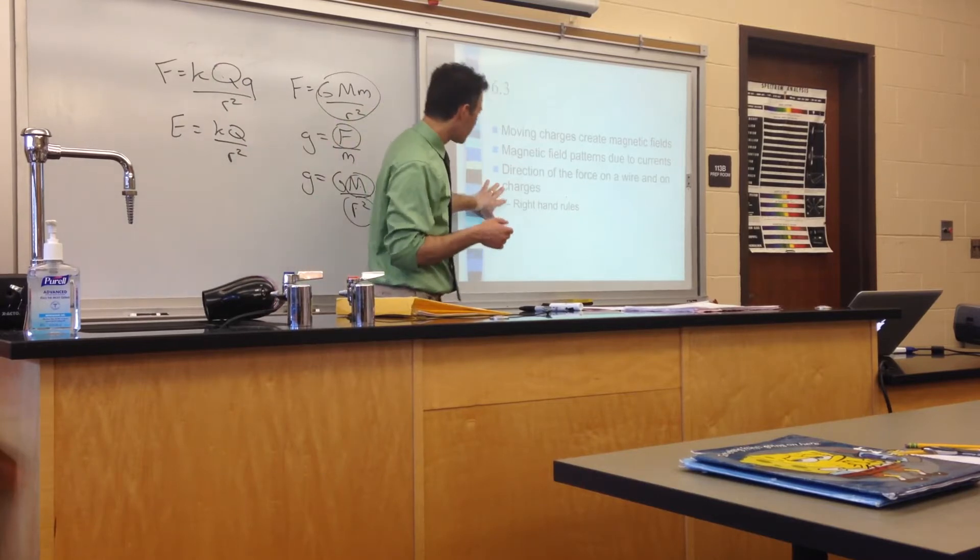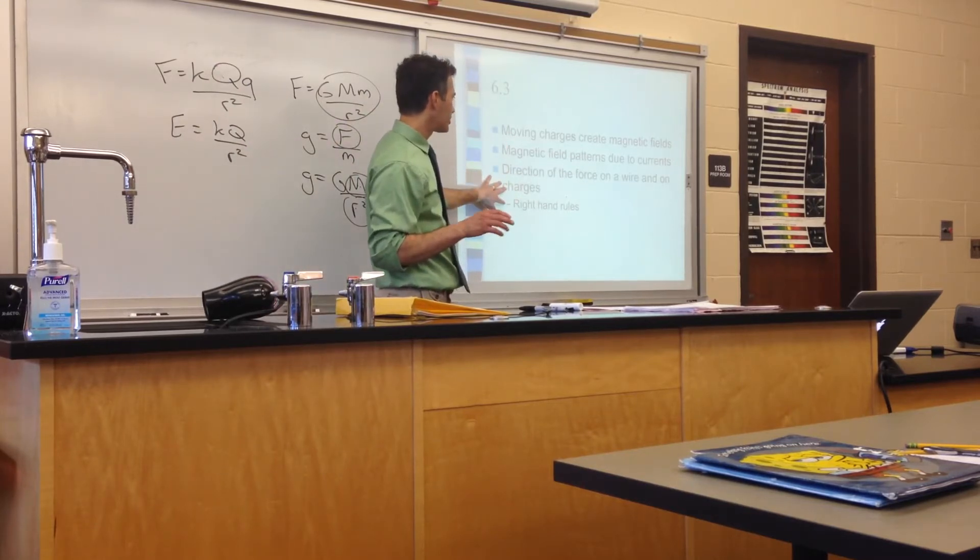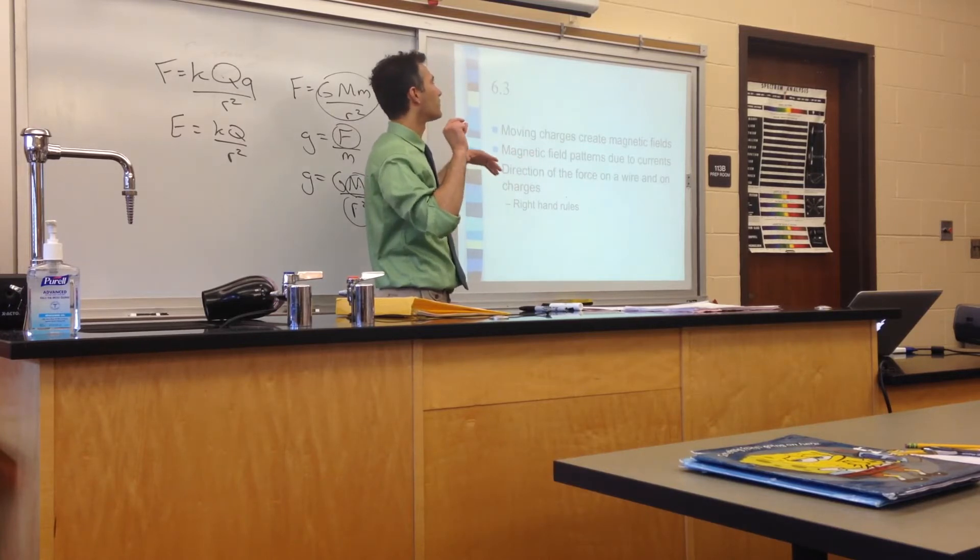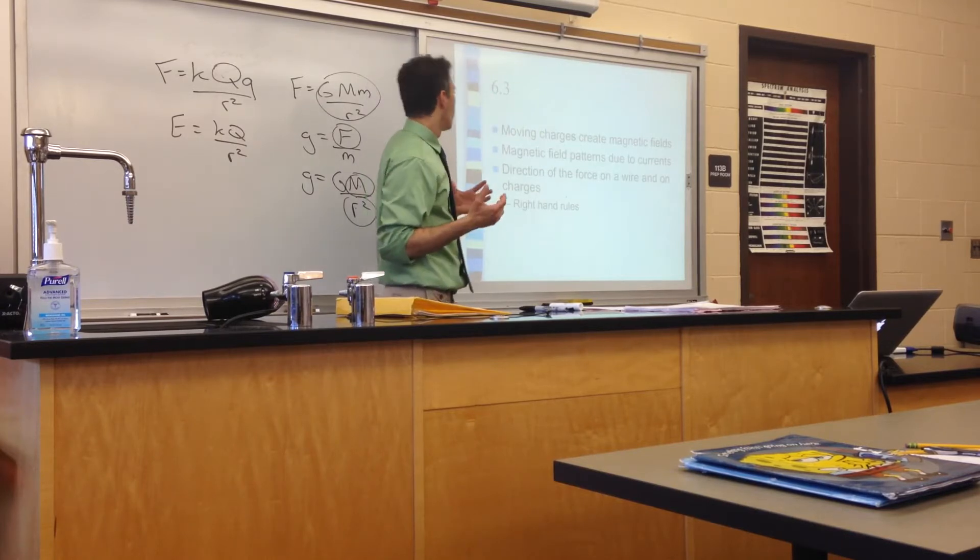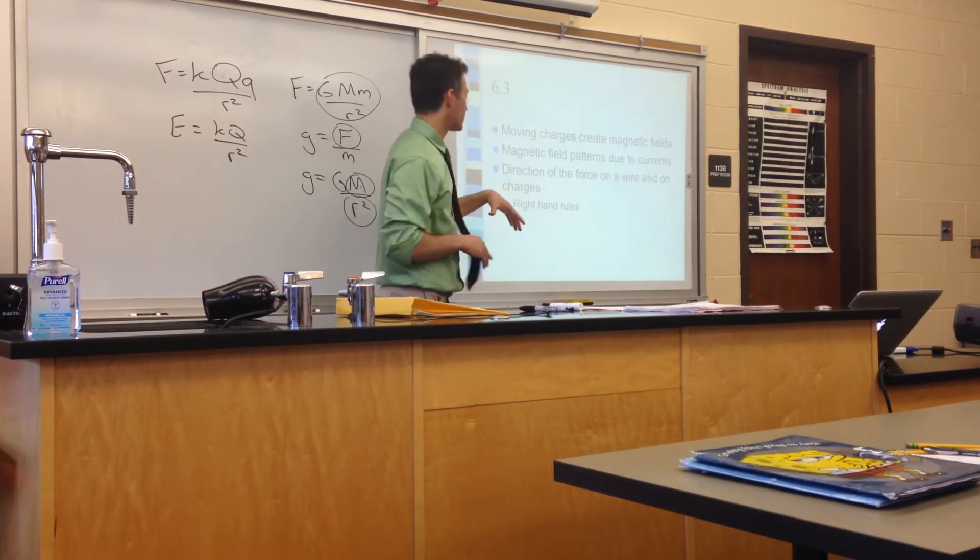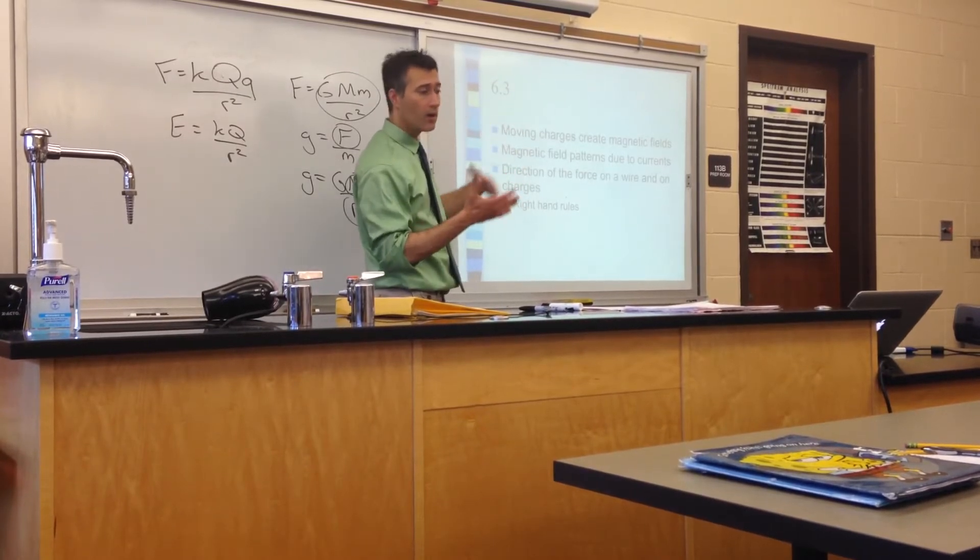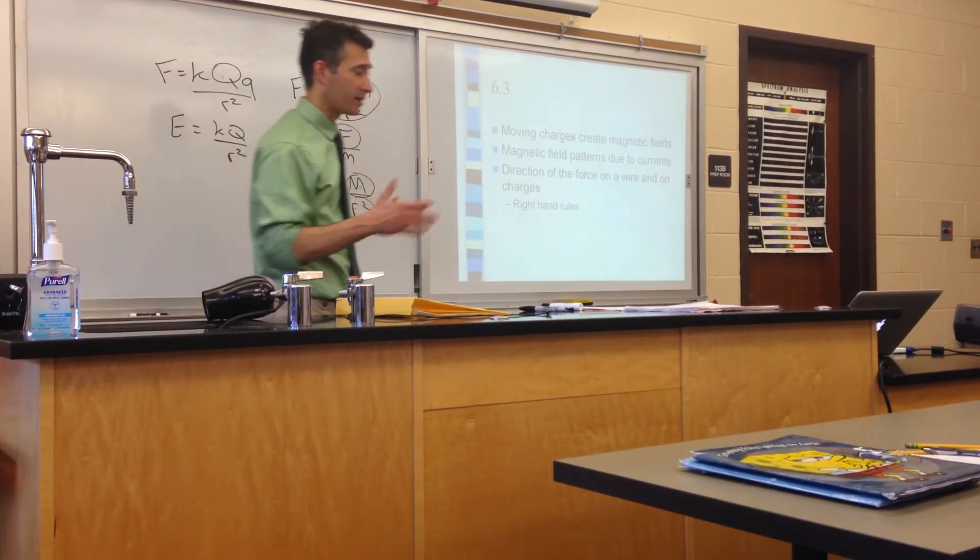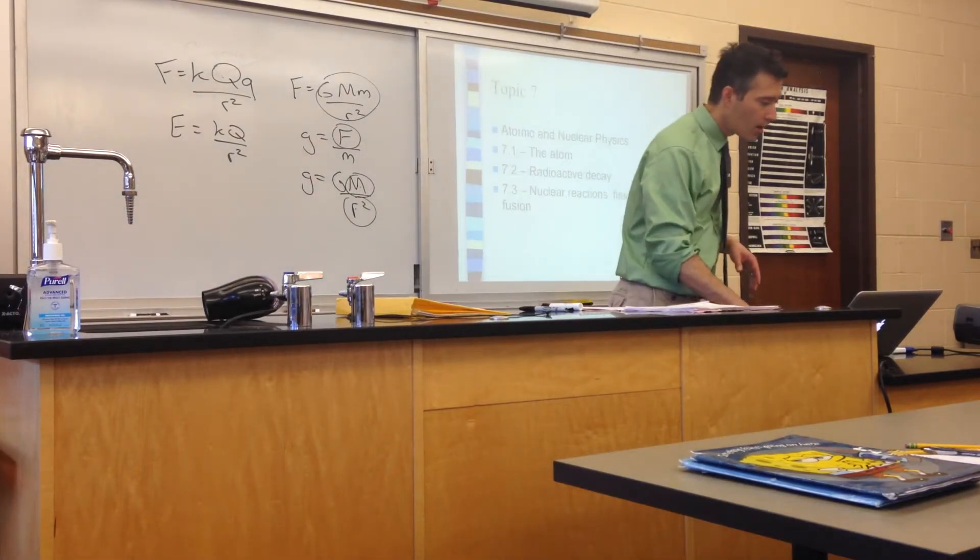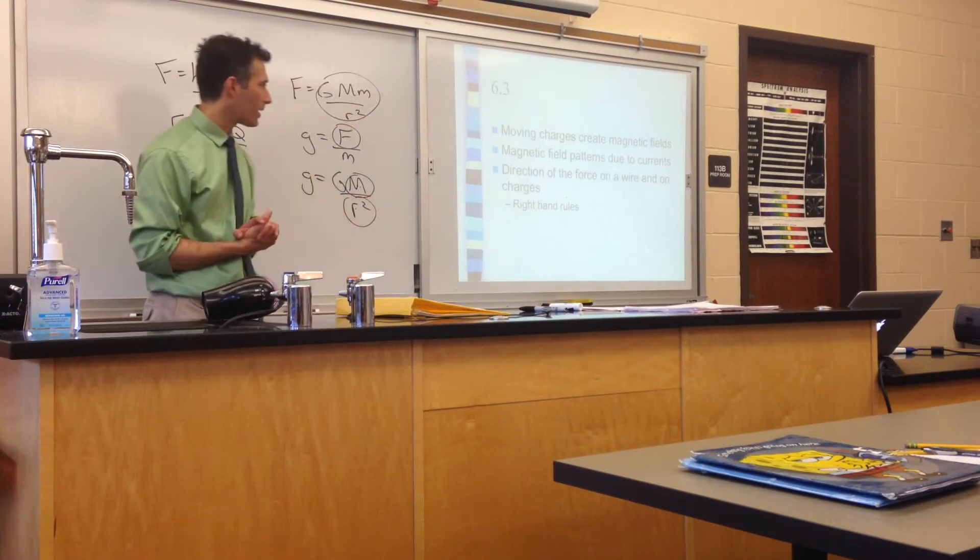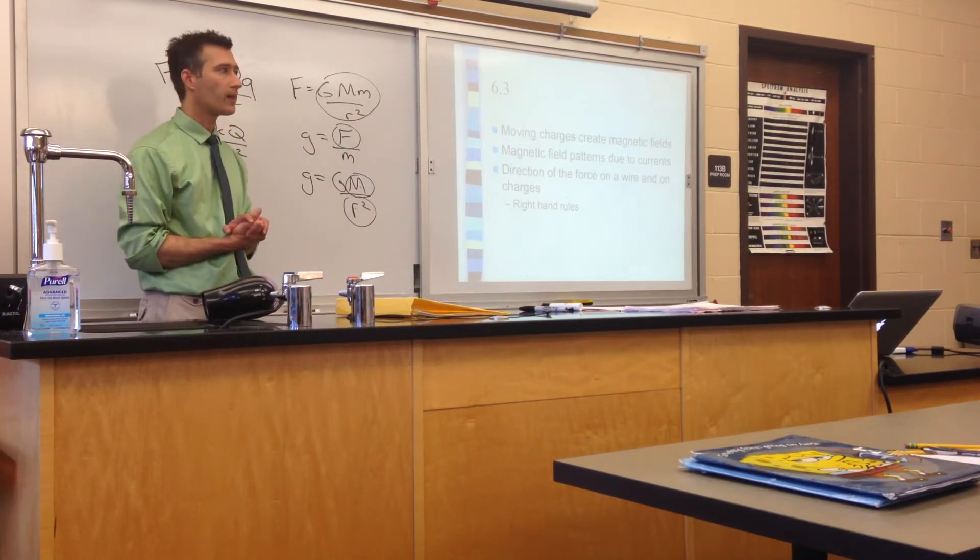Same thing with the wire. The only thing with the wire is we do just pretend that the current is positive charges, or at least conventional current is positive charges. So if we use the second right-hand rule the exact same way with the wire, we just make sure that we pretend that it's positive charges. Any other issues with gravitational, electric, or magnetic forces and fields?